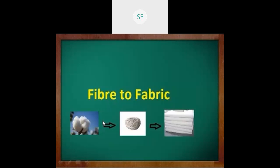What are Natural Fibers? The fibers are obtained from plants and animals. Natural Fibers are classified as Plant Fibers and Animal Fibers. Plant Fibers are obtained from plants like cotton and wheat.